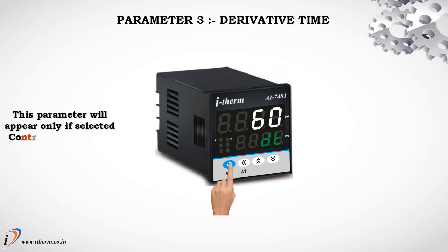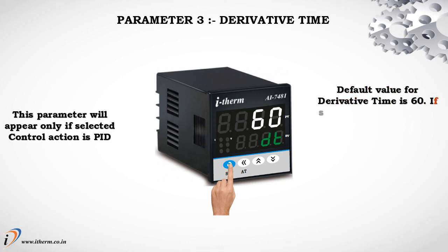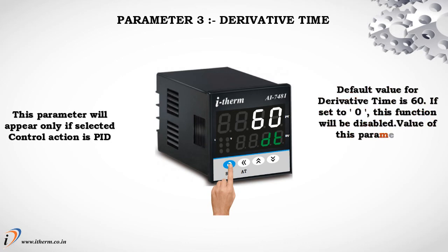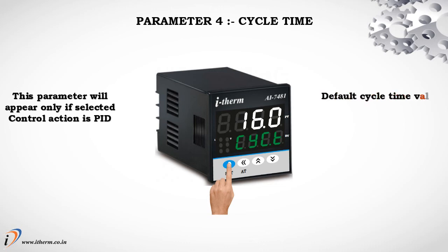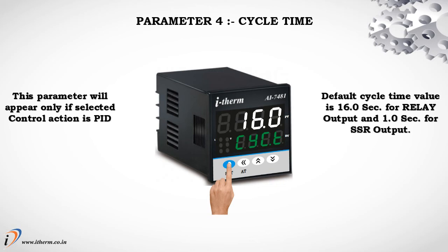Parameter 3: Derivative Time. This parameter will appear only if the selected control action is PID. Default cycle time value is 16.0 for relay output and 1.0 for SSR output.